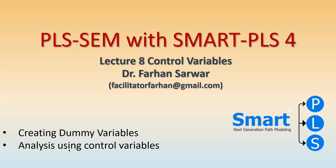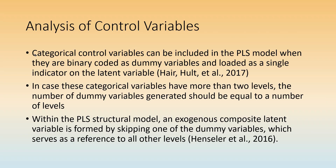We will discuss how we can use and analyze our structural model using control variables. Categorical control variables can be included in the PLS model when they are binary coded as dummy variables and loaded as a single indicator on the latent variable. In case these categorical variables have more than two levels, the number of dummy variables generated should be equal to the number of levels. When running the structural model, an exogenous composite latent variable is formed by skipping one of the dummy variables, which serves as a reference to all other levels.